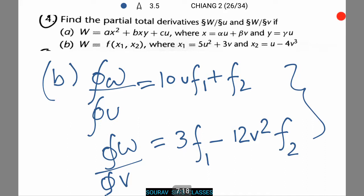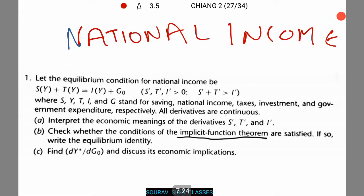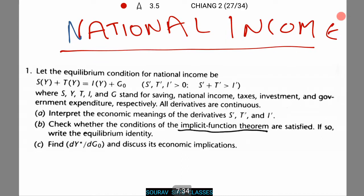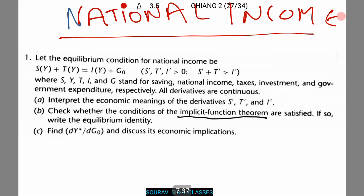Here we go for the next question. Now we will go into one of the most grey areas and one of the most sought out areas of comparative statics. That is national income. Here we are given a question where we have the equilibrium condition of S(Y) plus T(Y) equals I(Y) plus g0. Now we have to find and interpret the economic meaning of the derivatives S dash, T dash and I dash.